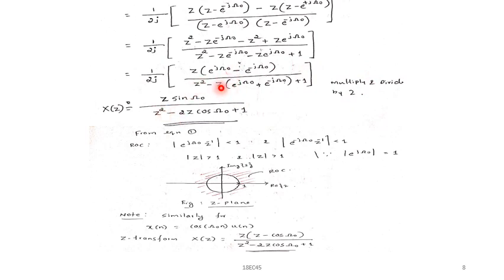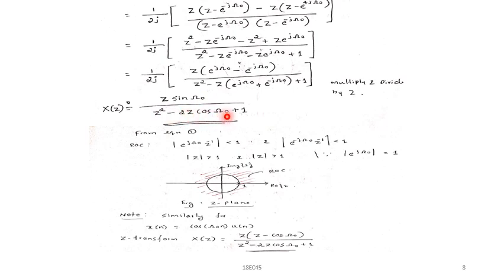Applying these identities, the final result is X(Z) equal to Z times sin(omega naught) divided by Z squared minus 2Z cos(omega naught) plus 1. To determine the ROC: the magnitude of e to the power j omega naught Z inverse must be less than 1. Since the magnitude of e to the power j omega naught equals 1, the condition reduces to magnitude of Z inverse less than 1, giving magnitude of Z greater than 1. So the ROC is magnitude of Z greater than 1.